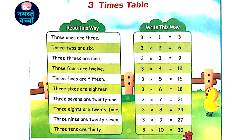3 8's are 24, 3 9's are 27, 3 10's are 30.